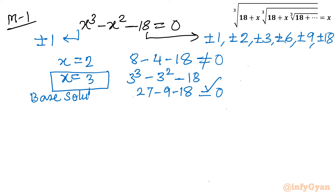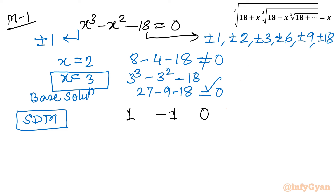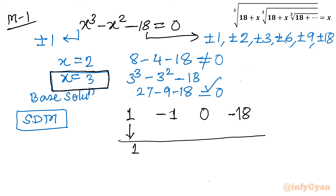Now I will use synthetic division to find the remaining two roots. Writing all coefficients of the cubic equation: coefficient of x cubed is 1, coefficient of x squared is minus 1, coefficient of x is 0, and the constant is minus 18. With base solution x equals 3, we get 1, then 3 times 1 is 3, giving 2; 3 times 2 is 6; 6 times 3 is 18. So the resulting coefficients 1, 2, and 6 give the quadratic x squared plus 2x plus 6.